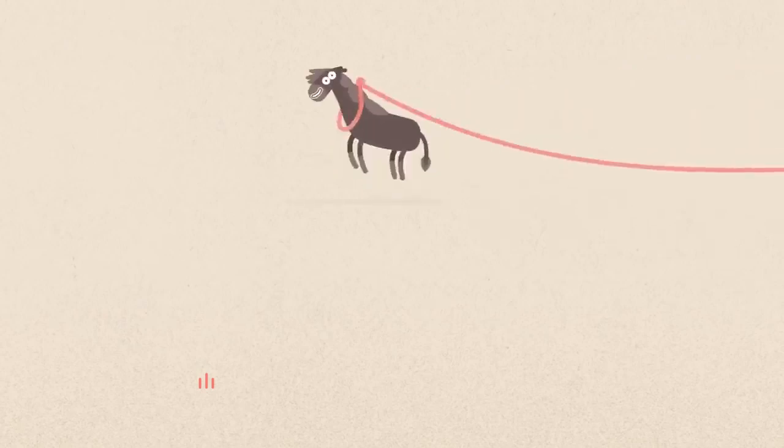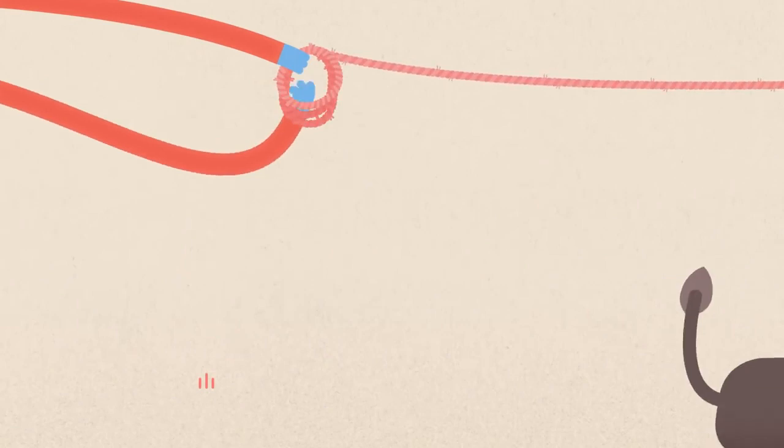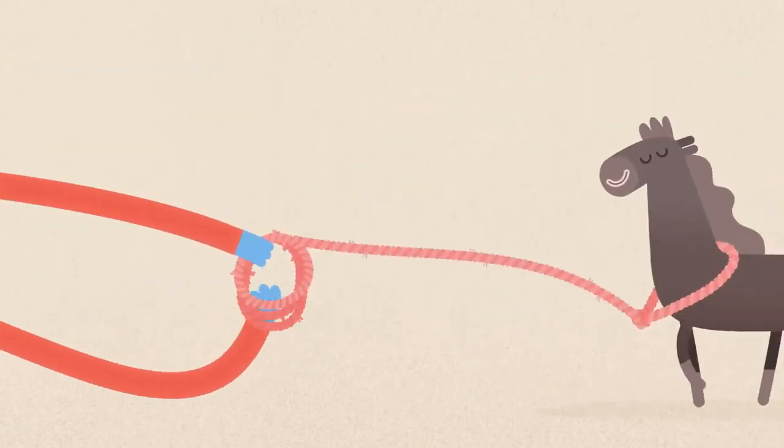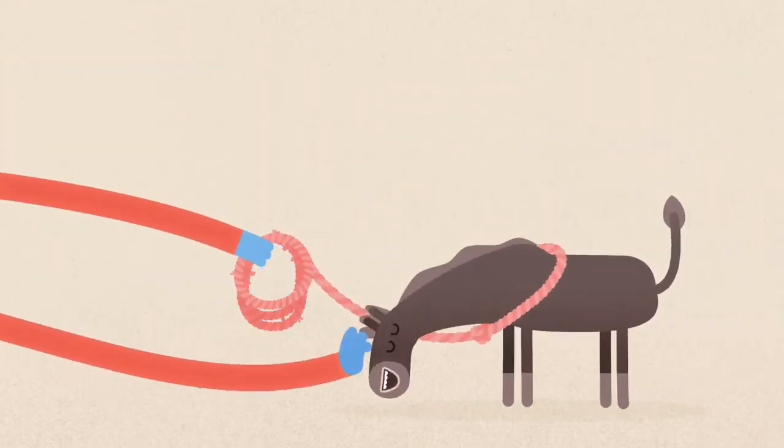The horse runs around, feeling like it's got all the space in the world. But very slowly, the rope's brought in, and the horse adjusts to this feeling, until it comes to a natural place of rest.